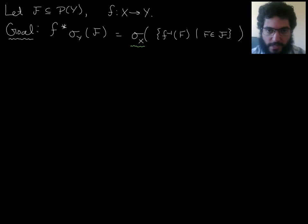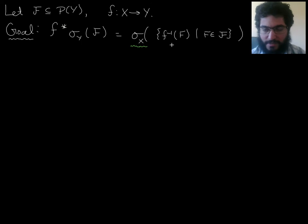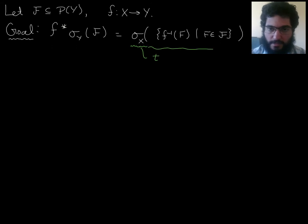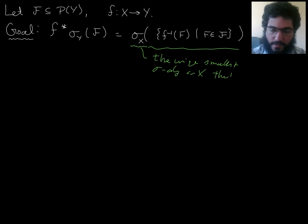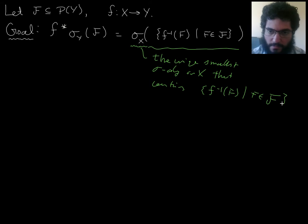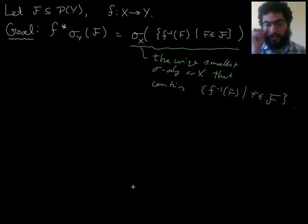So let's start with a reminder as to what this notation means. When I say sigma sub x of this — usually we don't write the subscript, I'm just writing it here to help keep track — when we say sigma of this thing, we're talking about the sigma algebra generated by this thing, meaning the unique smallest sigma algebra on x that contains the thing inside here, the generating collection. We worked a little bit to prove that uniqueness, so it is the unique smallest sigma algebra that contains this.